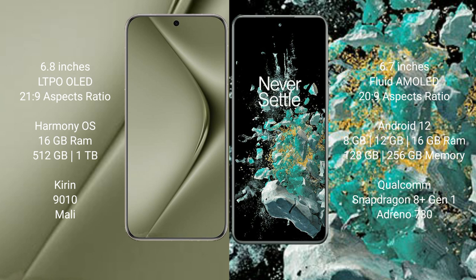Huawei Pura 70 Ultra comes with 16GB RAM and 512GB or 1TB internal storage, with a Kirin 9010 processor and Mali GPU. OnePlus 10T comes with 8GB, 12GB, or 16GB RAM and 128GB or 256GB internal storage, with a Qualcomm Snapdragon 8 Gen 1 processor and Adreno 730 GPU.